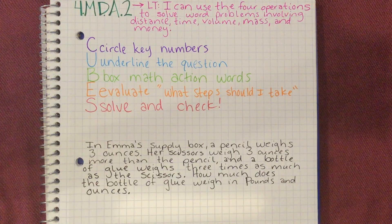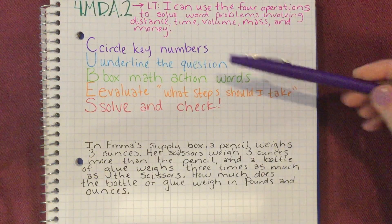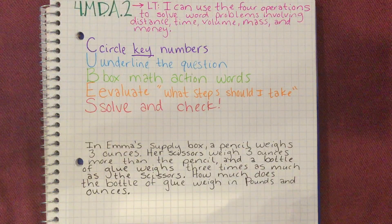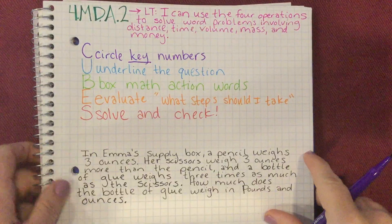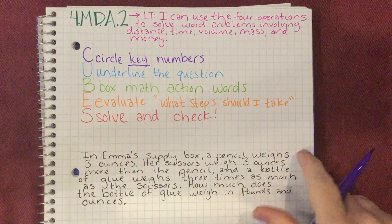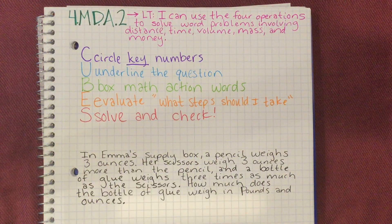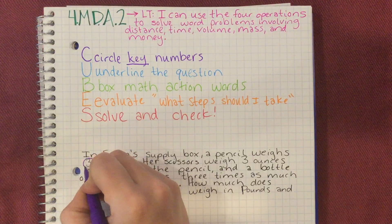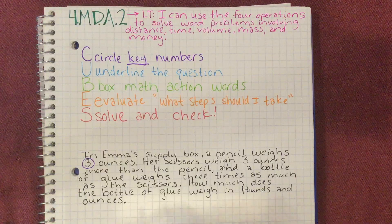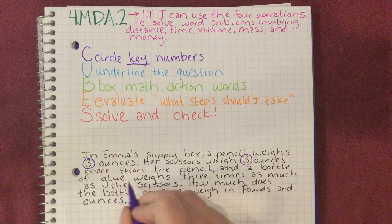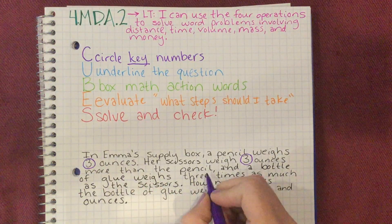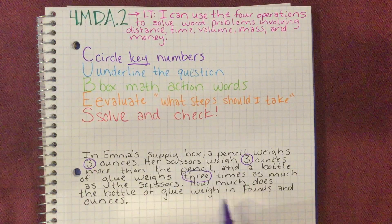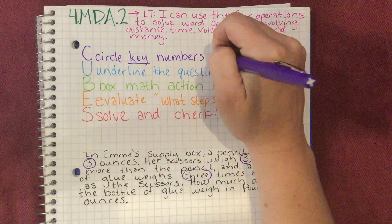The first thing we're going to do now that we've read it is read it through again, closely, and as we read it this time we are going to circle key numbers. This word 'key' is important because a lot of times problems will give us distractors and more numbers than we need. So we need to make sure these are key numbers — numbers that are going to help us solve the problem. And if you're not sure, just circle them anyway. A pencil weighs three ounces; her scissors weigh three ounces more than the pencil; and a bottle of glue weighs three times as much as the scissors. So we have circled the key numbers.